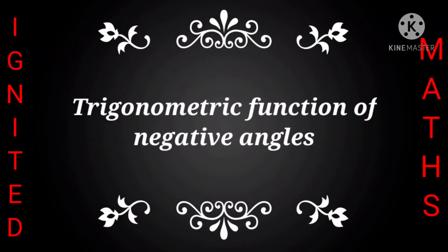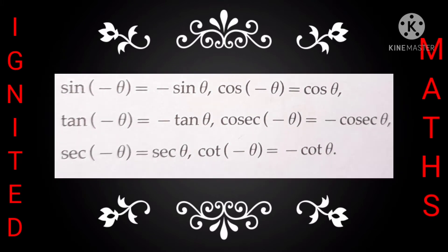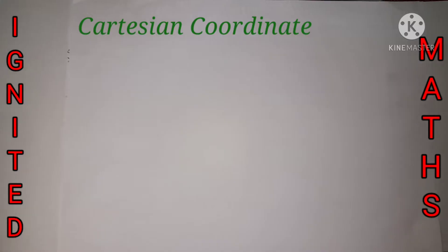Friends, welcome to Igniter Max. In this video we are going to do the trigonometric functions of the negative angle — that is, sine of minus theta is equal to minus sine theta, and cos of minus theta is equal to cos theta. We are going to prove it, so stay till the end and the concept will be clear.